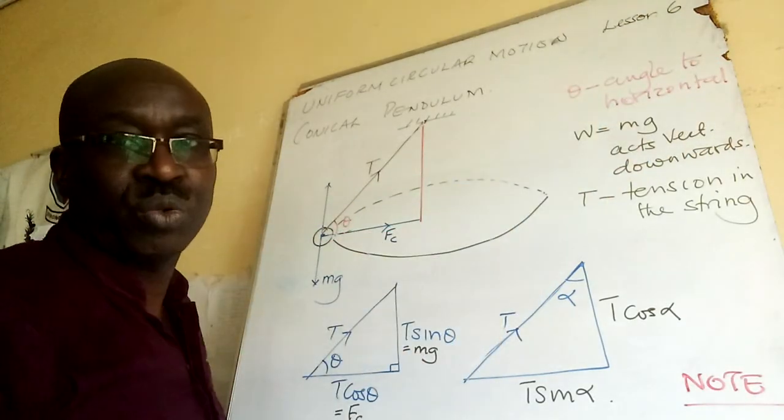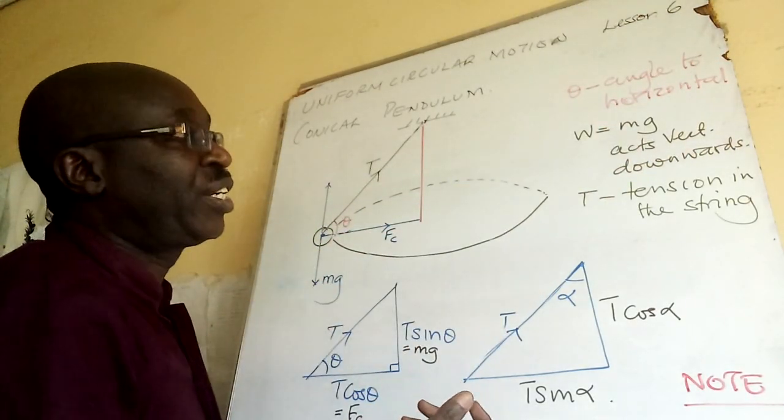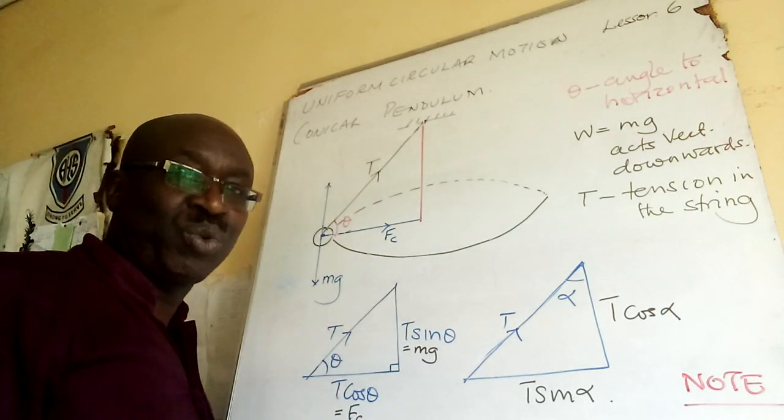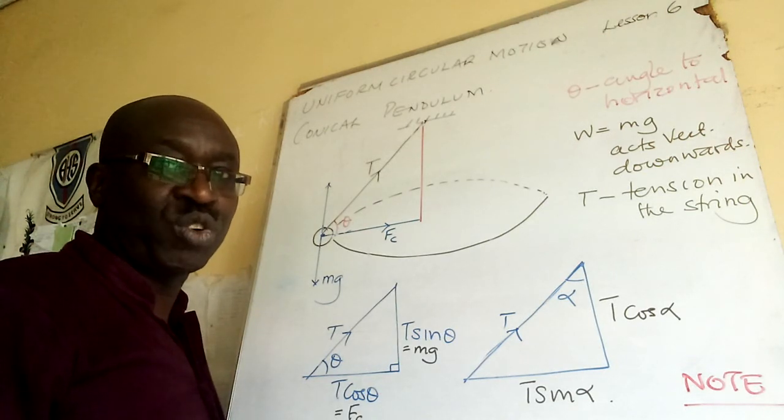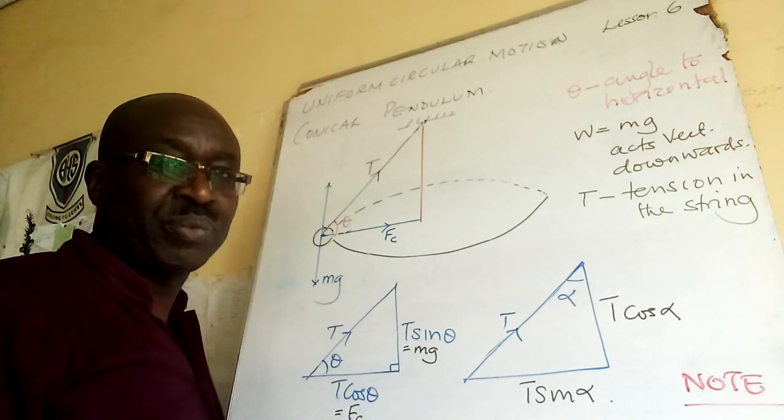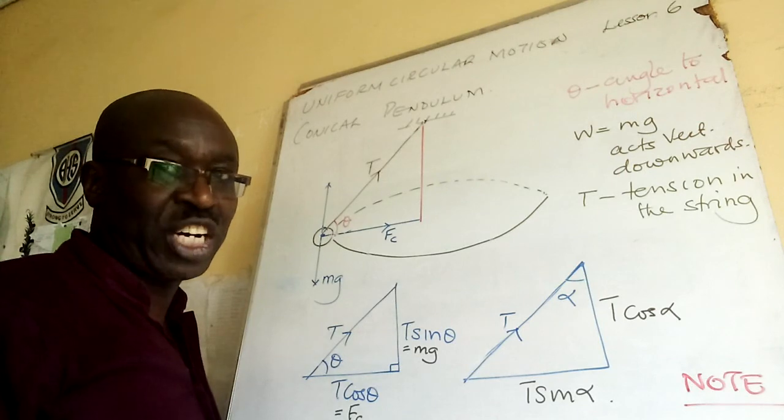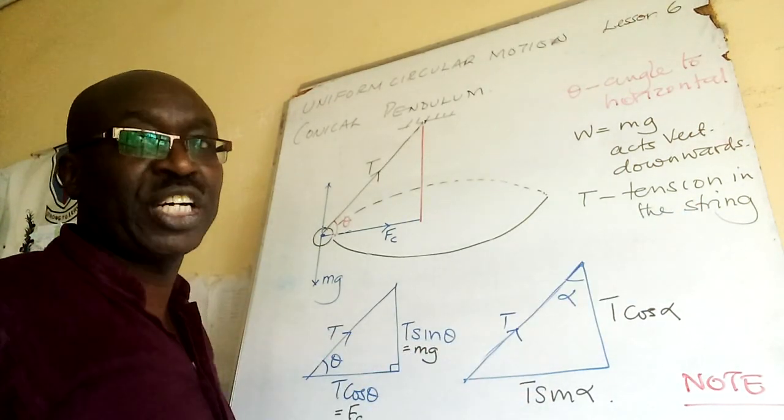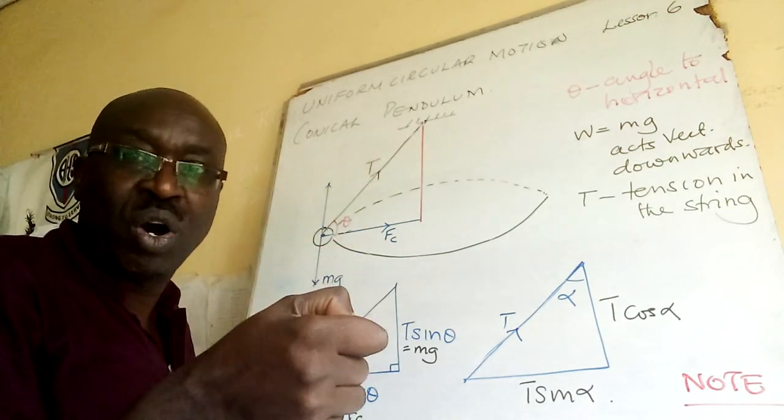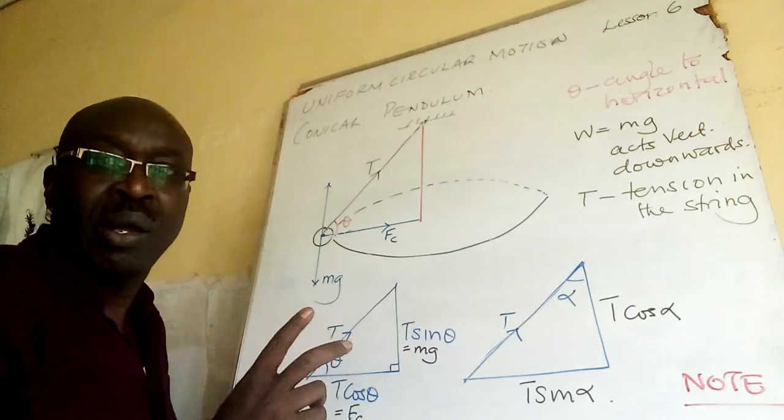Theta is the angle to horizontal. mg is weight, so if I'm given the mass of a body I can convert it to weight or force in Newton. If it is in kilogram multiply by 10, if it is in gram divided by 100. T is the tension in the string. The tension is towards where you are holding.